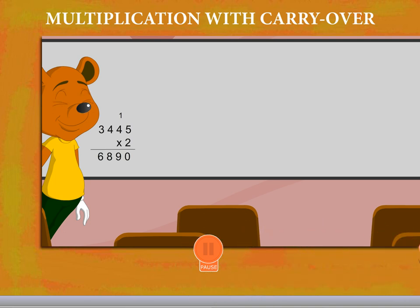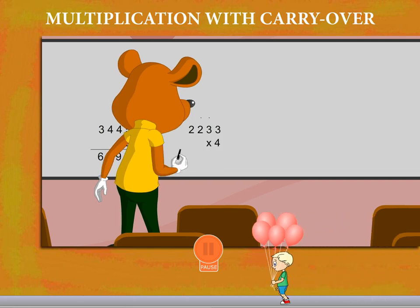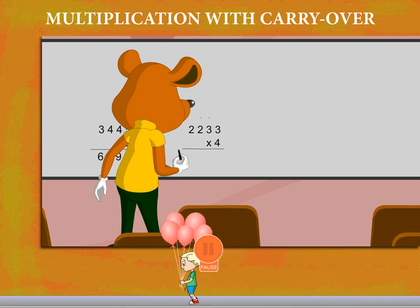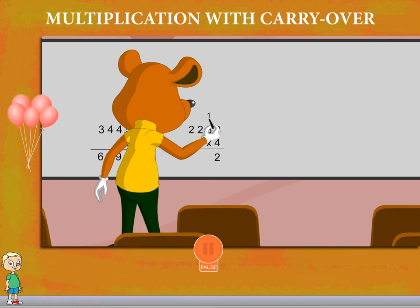Robbie has one more question: 2,233 multiplied by 4. He uses the same method. 4 into 3 is 12. So he writes 2 and carries the 1.